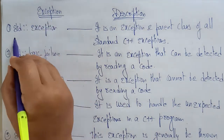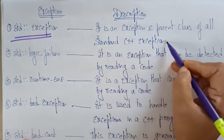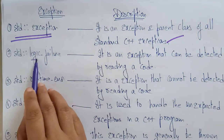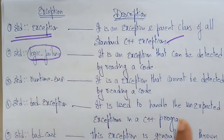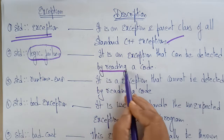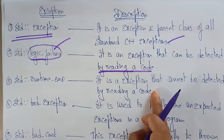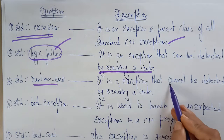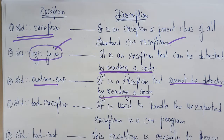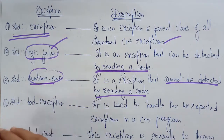std::exception is the base class — it is the parent of all standard C++ exceptions. std::logic_failure is the parent for all logic-related failure exceptions. It is an exception that can be detected by reading the code. Logic failure can be detected by reading the code, whereas runtime error cannot be detected simply by reading the code — the exception can only be detected at runtime.